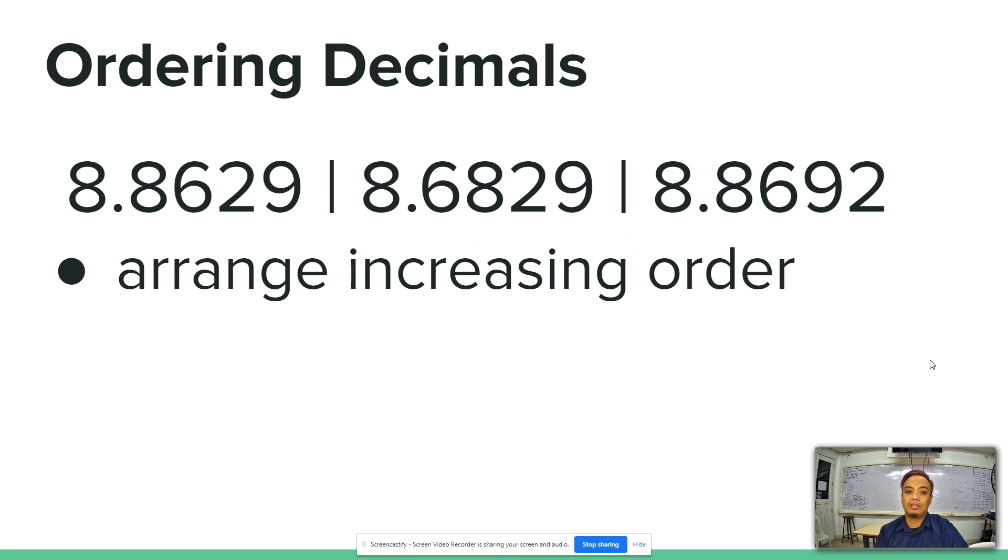In ordering decimals, we can use that same process. But we have to take note on what order should we arrange the given numbers. In this case, we have to arrange the decimals in increasing order. It means from smaller value to the biggest value.